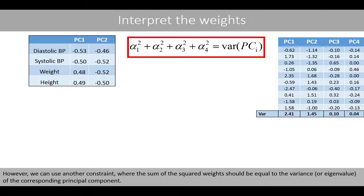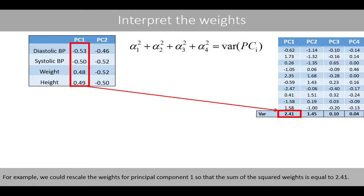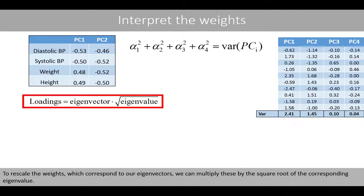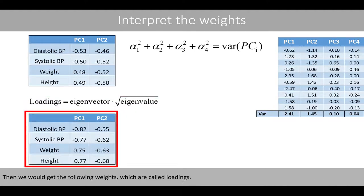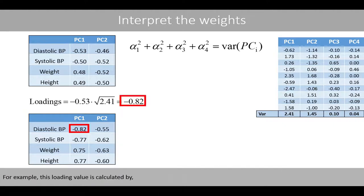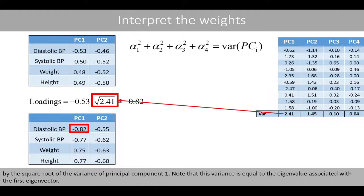However, we can use another constraint where the sum of the squared weights should be equal to the variance, or eigenvalue, of the corresponding principal component. For example, we could rescale the weights for principal component 1 so that the sum of the squared weights is equal to 2.41. To rescale the weights, which correspond to our eigenvectors, we can multiply these by the square root of the corresponding eigenvalue. Then we'll get the following weights, which are called loadings. For example, this loading value is calculated by multiplying the value of this weight by the square root of the variance of principal component 1.